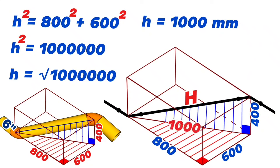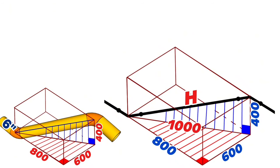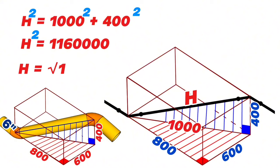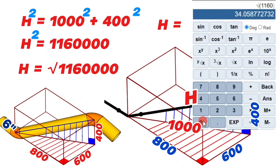The 1,000 millimeters is the hypotenuse of the horizontal red triangle and also one of the perpendicular sides of the vertical blue triangle. Now finding big H: according to the Pythagorean theorem, big H squared equals 1,000 squared plus 400 squared, which equals 1,160,000. Therefore big H equals the square root of 1,160,000, which is approximately 1,077 millimeters.